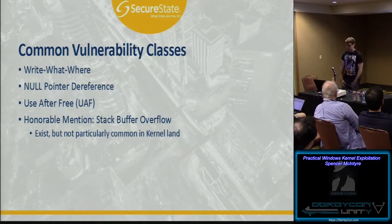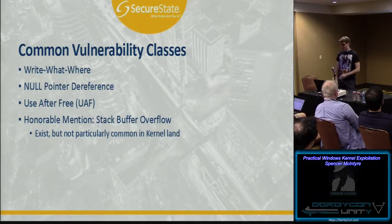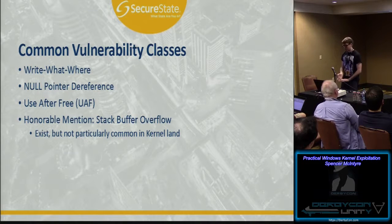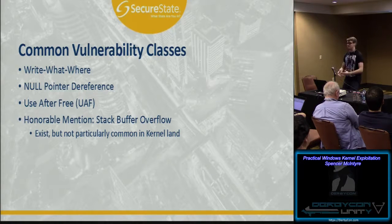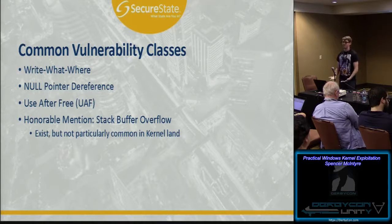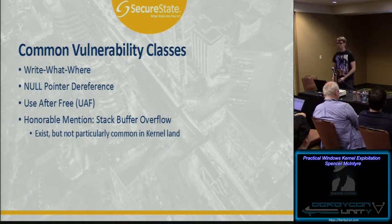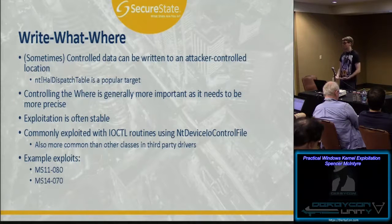We're going to talk about common vulnerability classes. I have them broken out — the top three are the primary ones: write-what-where, null pointer dereference, and then use-after-free. And finally we'll have an honorable mention for stack buffer overflow, because usually when people think about vulnerabilities they talk about stack buffer overflows, but they're just not quite as prevalent in kernel land. I can't think of any recent exploit for a Microsoft driver that leveraged a stack buffer overflow.